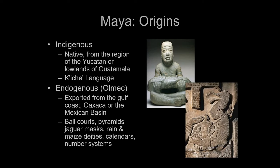Where the Maya come from is a bit of a mystery. One possibility is that they are native to the region. There are several dialects of Mayan — not just one. Yucatec is the dialect spoken up in the Yucatan, while down in the southern lowlands and into the southern highlands you have the K'iche' language, which is what the Popol Vuh was originally written in. The evidence suggests these people have always lived there, and that they simply pulled themselves up by their bootstraps.